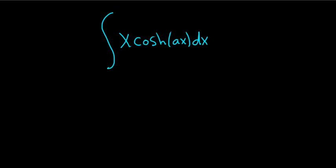Integrate x times the hyperbolic cosine of ax. There's two ways to do this. One way is to use integration by parts.